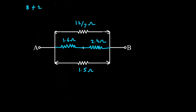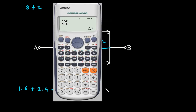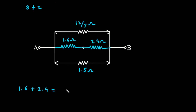Now, here we can clearly see this 1.6 Ohm is in series with 2.4 Ohm. So what we can do — we can add them: 1.6 plus 2.4 is 4, so it will be 4 Ohm.